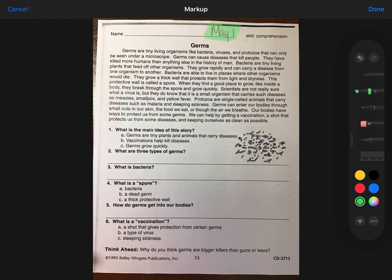Protozoa are single-celled animals that carry diseases such as malaria and sleeping sickness. Germs can enter our bodies through small cuts in our skin, the food we eat, or through the air we breathe. Our bodies have ways to protect us from some germs. We can help by getting a vaccination, a shot that protects us from some diseases, and keeping ourselves as clean as possible.